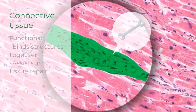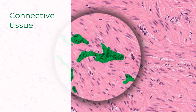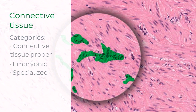Connective tissue can be classed into three different categories: connective tissue proper, embryonic connective tissue, and what is known as specialized connective tissue. In this tutorial, we'll only be looking at connective tissue proper.